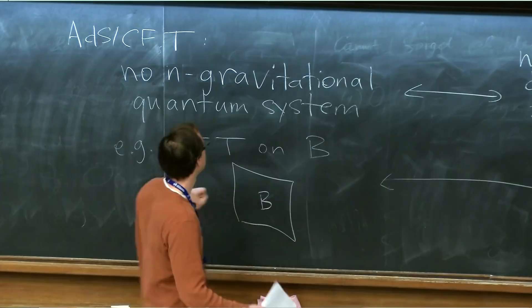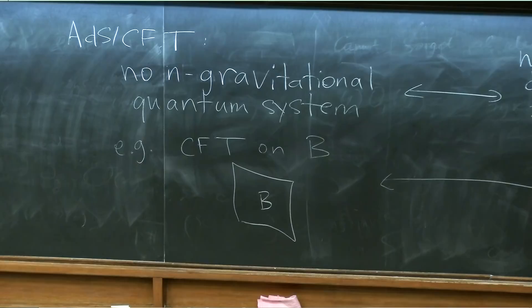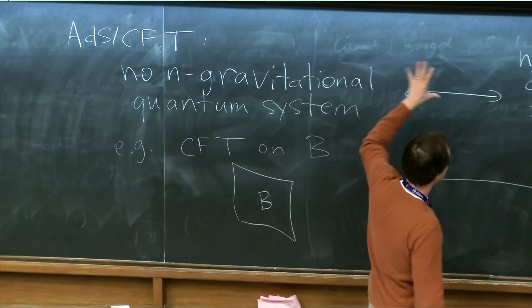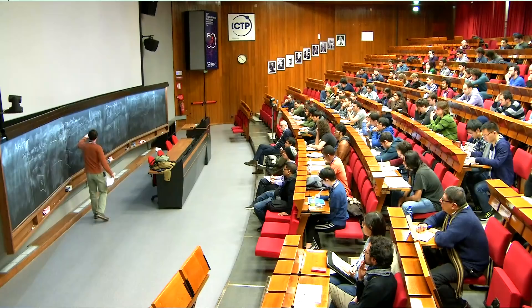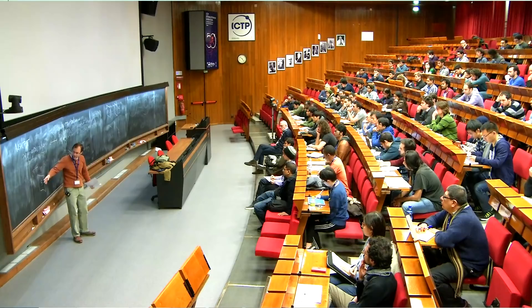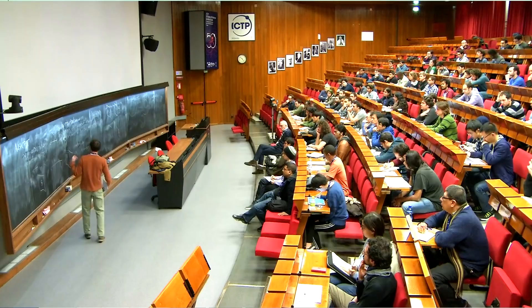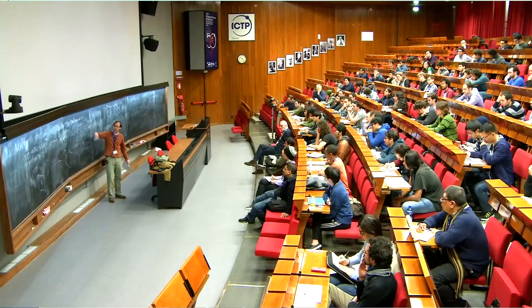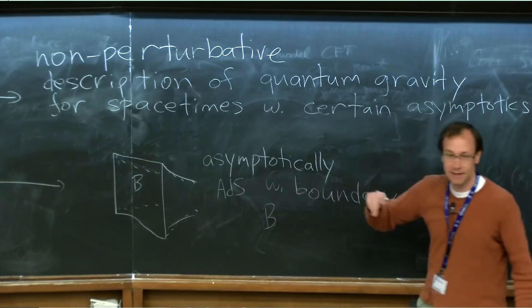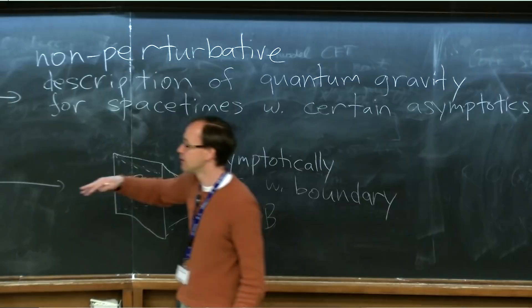The background B could be Minkowski space, a sphere times time, or actually anything you want — but it's fixed. We consider different states of the CFT on this fixed background. Through this magical equivalence that Maldacena taught us about, this theory somehow describes non-perturbatively and completely a theory of quantum gravity for space-times with certain asymptotics determined by the geometry B and the UV behavior of the field theory — specifically, asymptotically anti-de-Sitter spacetimes.